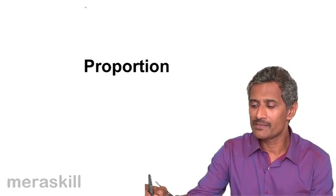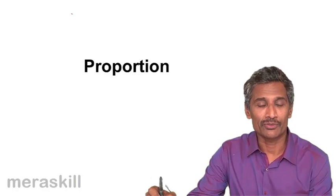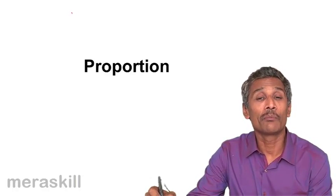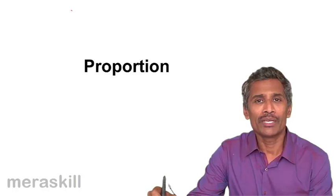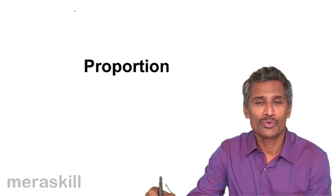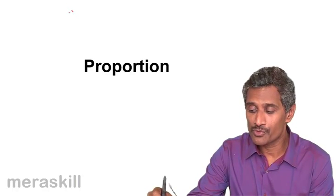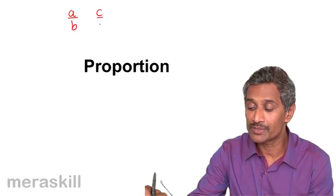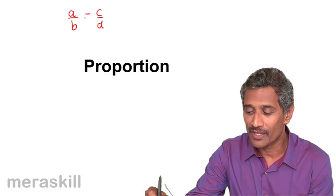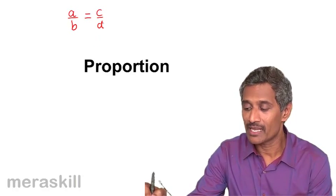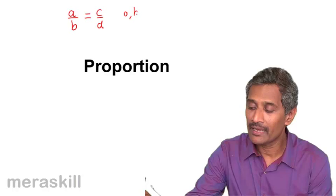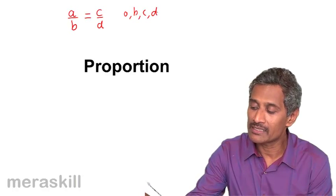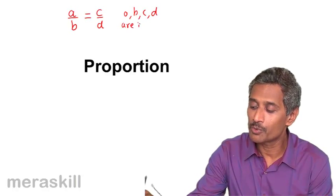Proportion is basically an extension of a ratio, but it's to do with more than one ratio. When you say two ratios are equal, suppose you have a ratio A by B and you have a ratio C by D and suppose they are equal, we say that A, B, C and D are in proportion.